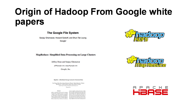The Nutch search engine project team implemented this in an open source way and named it the Hadoop Distributed File System. At the same time, Google published a white paper on MapReduce — how they process their huge datasets — and this was implemented in open source as Hadoop MapReduce. Additionally, Google BigTable was implemented in open source as Apache HBase.